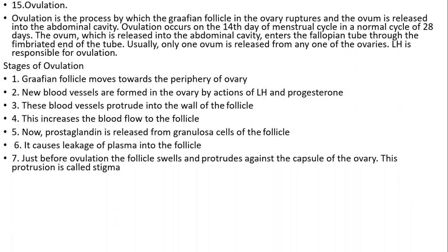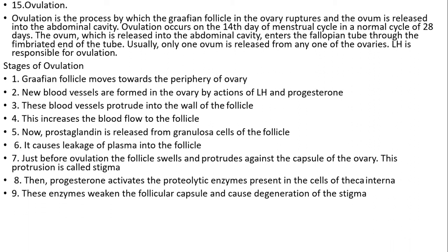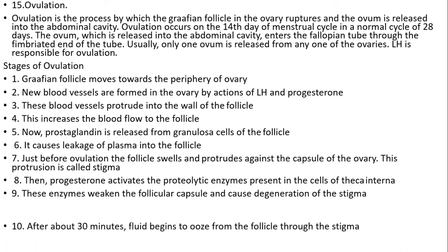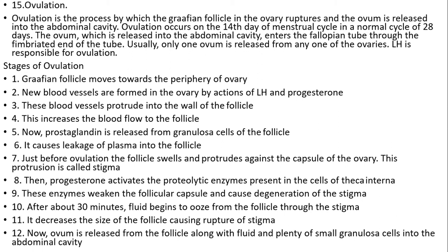Just before ovulation, the follicle swells and protrudes against the capsule of the ovary — this protrusion is called the stigma. When progesterone activates proteolytic enzymes present in the cells of the theca interna, these enzymes weaken the follicular capsule and cause degeneration of the stigma. After about 30 minutes, fluid begins to ooze from the follicle through the stigma, decreasing the size of the follicle and causing rupture of the stigma. Now the ovum is released from the follicle along with fluid and granulosa cells into the abdominal cavity.